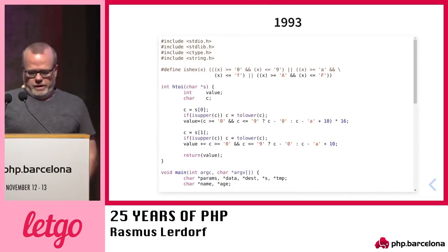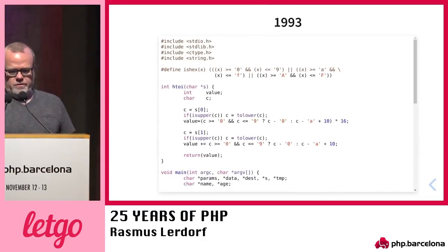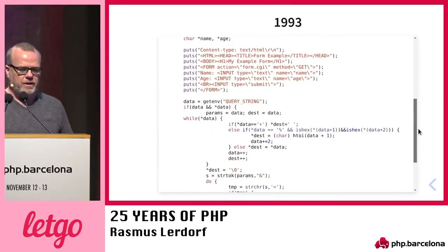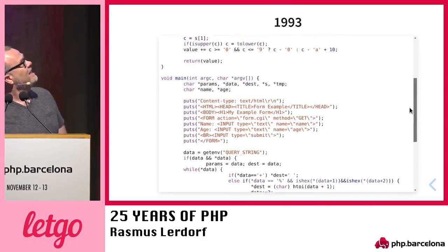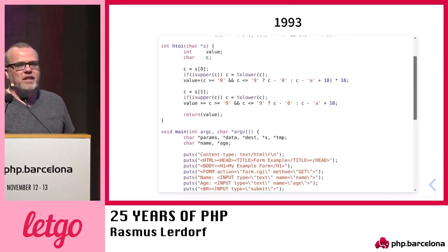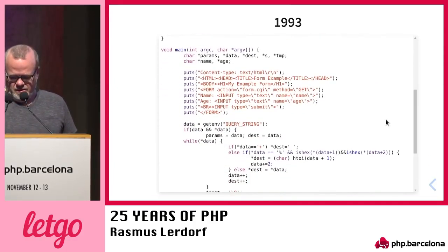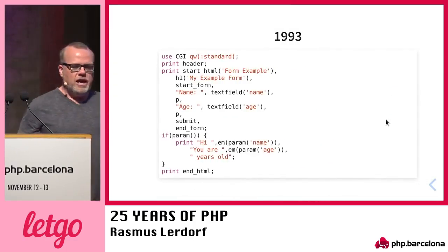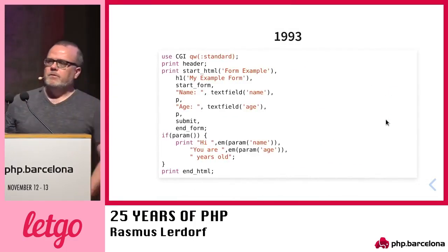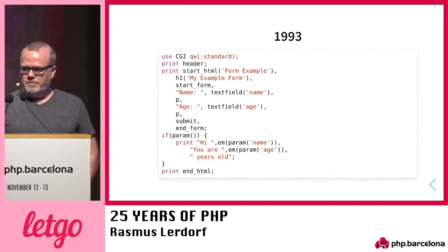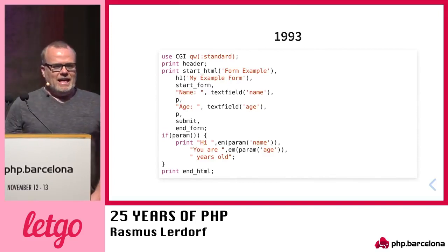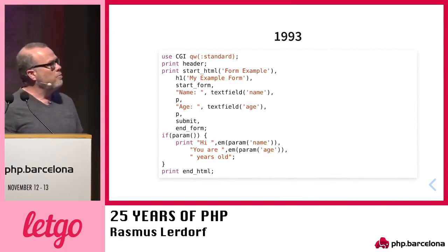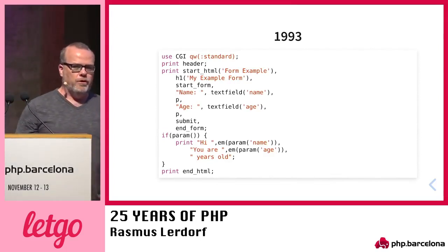The code in 1993 to do any sort of dynamic web work would look like this. This is a CGI-bin written in C — not nice to work with. Most of the world switched to CGI.pm, a Perl module for writing CGI scripts. Lots of people loved it, but this was still programming HTML in Perl.